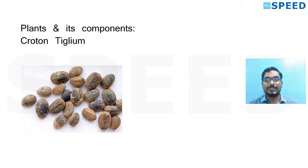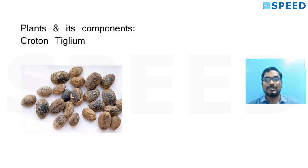Ricinus seeds are shiny brown, while Croton tiglium seeds are brown but dull. The same variegated pattern may be present in Croton tiglium. The only point of difference between Ricinus and Croton seeds is that Croton seeds are dull brown — never forget that.